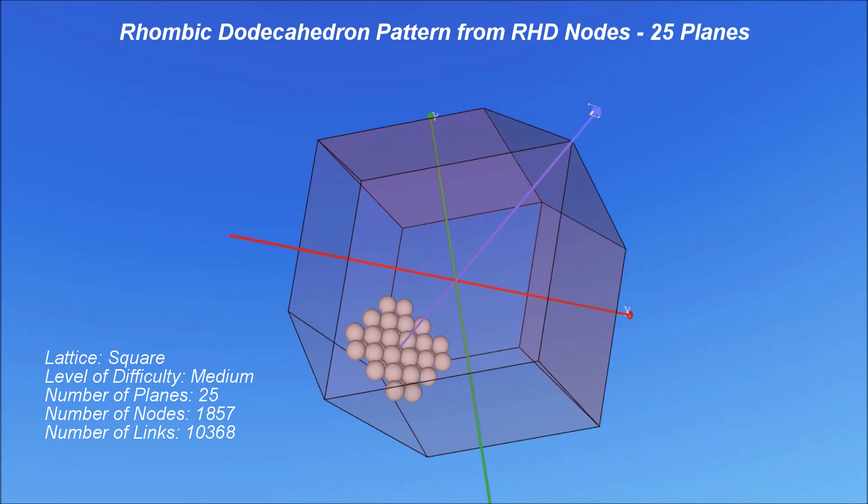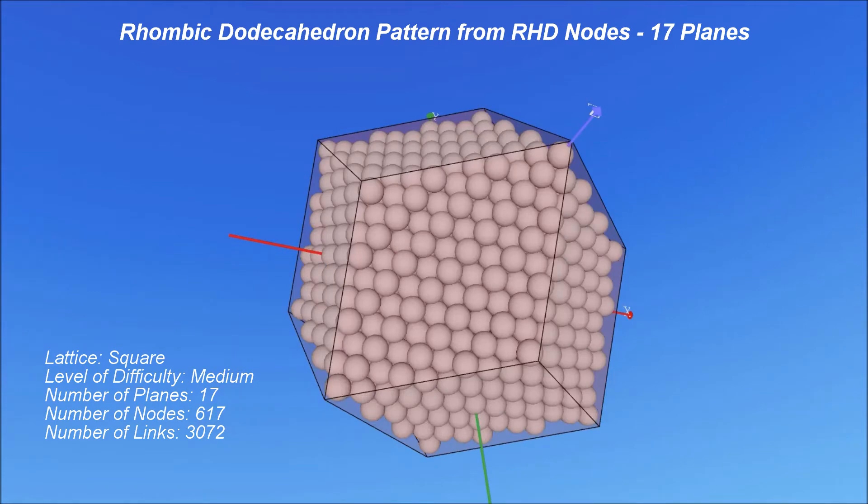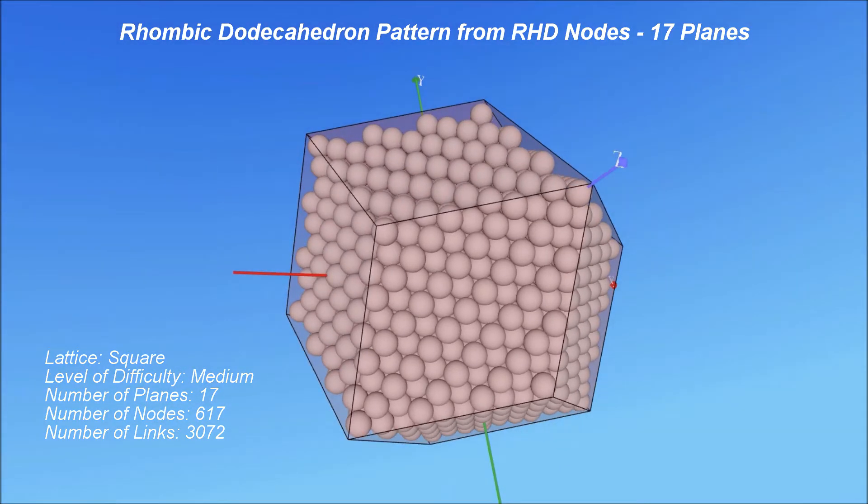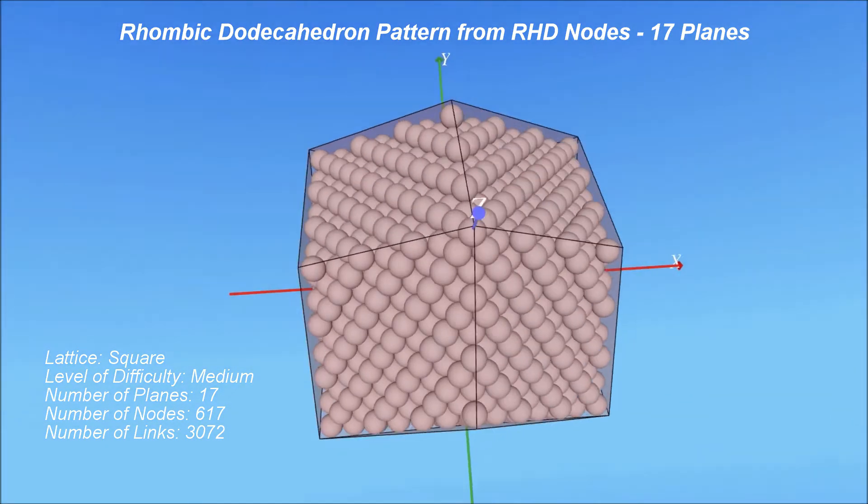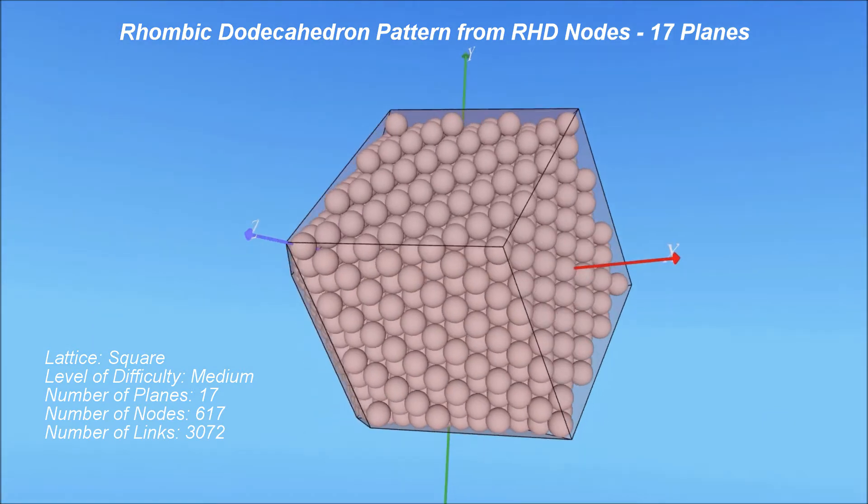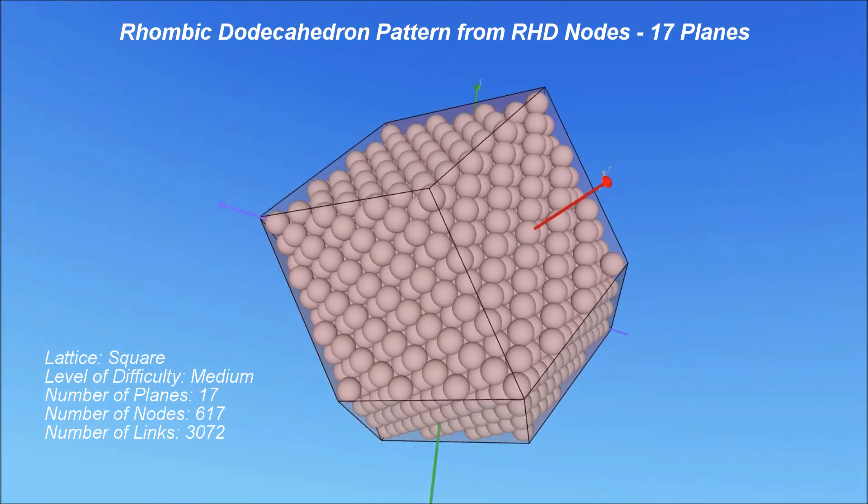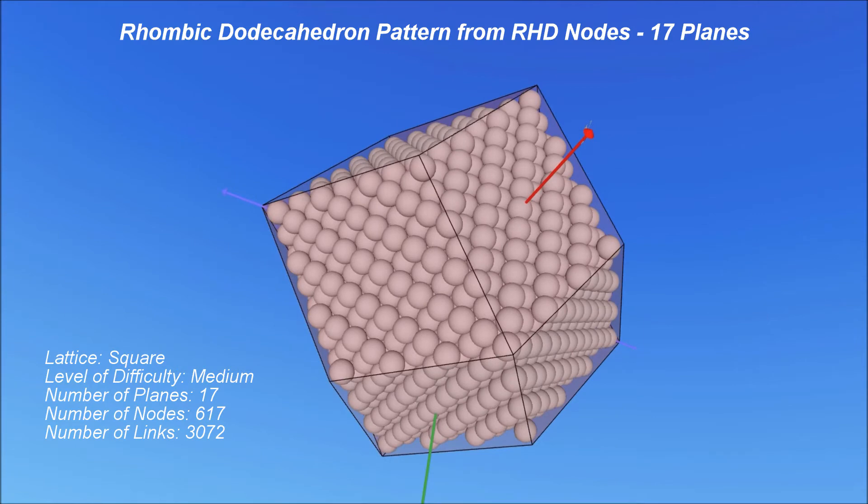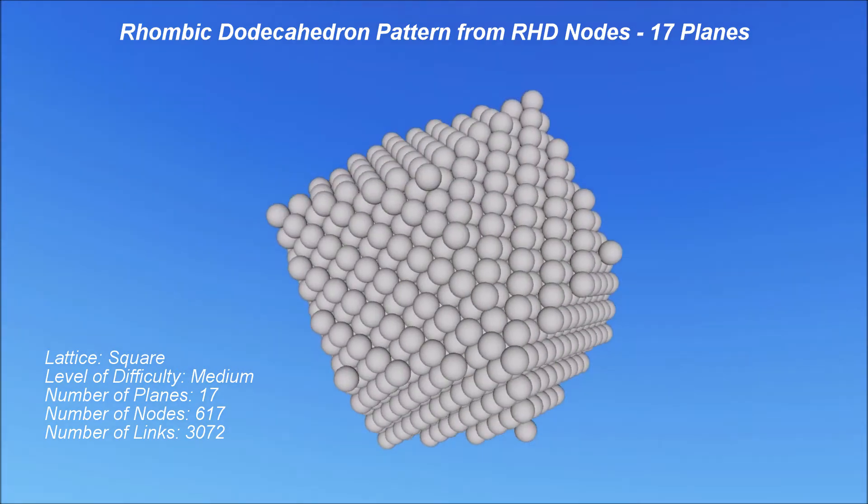As we increase the numbers of spheres used, a well-defined rhombic dodecahedron starts to emerge. The edges start to appear clearer. Same with the faces, a new underlining pattern, not seen up to now, can be seen on each face of this beautiful solid.